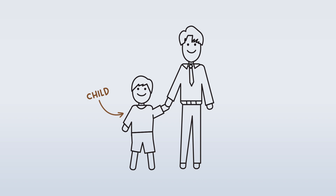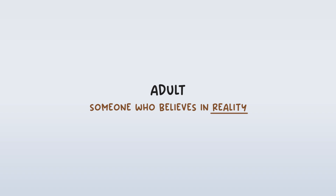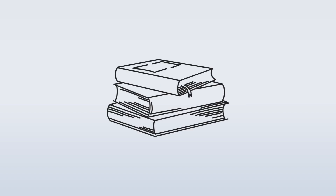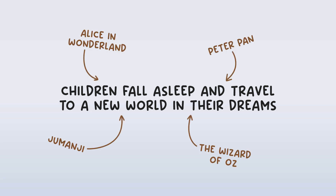But in my opinion, being a child and being an adult in the realm of ATZ's theoriness doesn't really have a lot to do with your age. The year somebody is born is not necessarily the determining factor on if they're considered a child or an adult. The definition I would give for children and adults in ATZ's content is that a child is someone who believes in their dreams, and an adult is someone who believes in reality. You can see this especially in the many stories ATZ has referenced, in which children fall asleep and travel to a new world in their dreams — this is the plot of Peter Pan, Alice in Wonderland, Jumanji, The Wizard of Oz, etc.